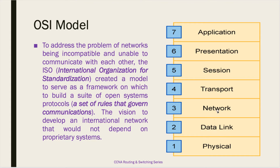Followed by the data link layer, we have the third layer — the network layer, or layer 3. When somebody says layer 3, they are talking about the network layer. The network layer provides connectivity and path selection between two or more host systems that could be located locally or geographically separated. As networks continue to grow, layer 3 plays a very important role, and we'll see this during hands-on exercises later.